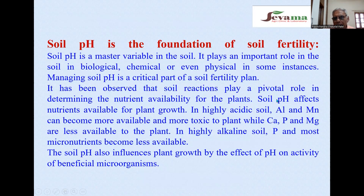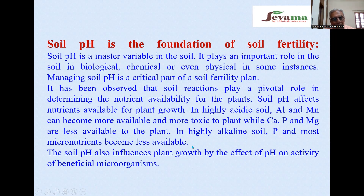Soil reactions play a role in determining nutrient availability for plants. In highly acidic soil, aluminum and manganese can become more available and toxic to plants, while calcium, phosphorus, and magnesium are less available. In highly alkaline soil, phosphorus and most micronutrients become less available. Soil pH also influences plant growth through its effect on beneficial microorganisms, which require a pH of 6.5 to 7.5. When soil pH is acidic or alkaline, the microorganism population declines.